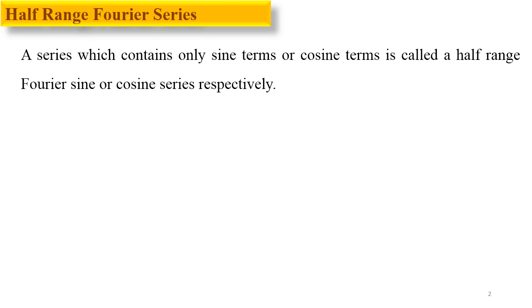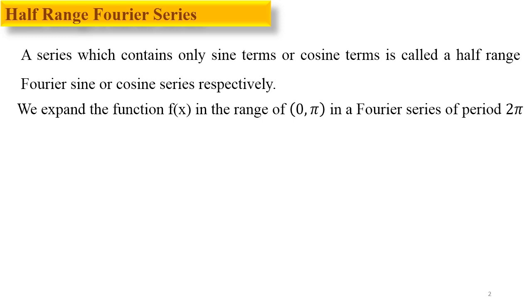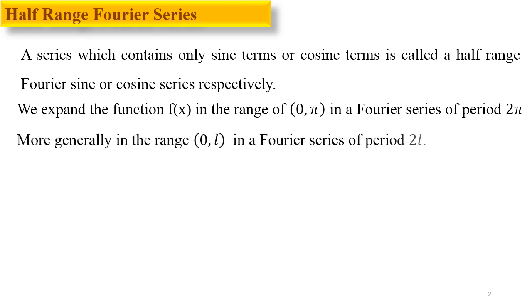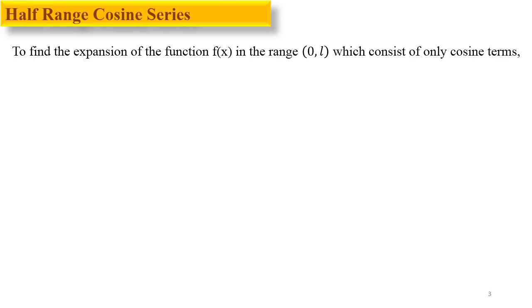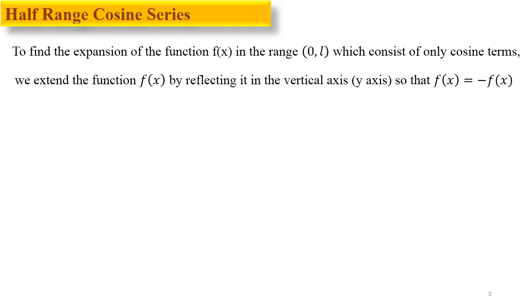In the Fourier series we have both cosine and sine terms, but in the half-range series we can have either sine or cosine only. We expand the function f(x) in the range 0 to π in the Fourier series of period 2π. Similarly, in the L-form the range will be 0 to L with Fourier series of period 2L. The half-range cosine series gives an expansion of f(x) on [0, L] consisting of cosine terms only.